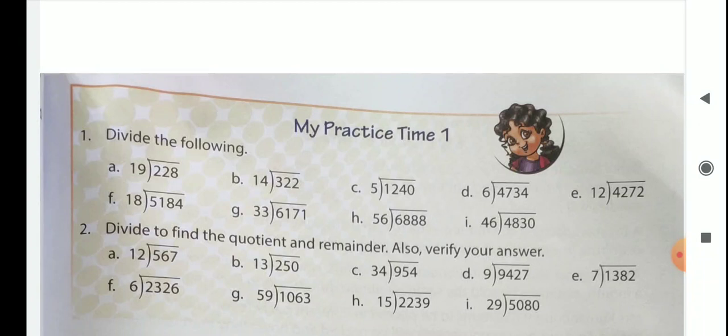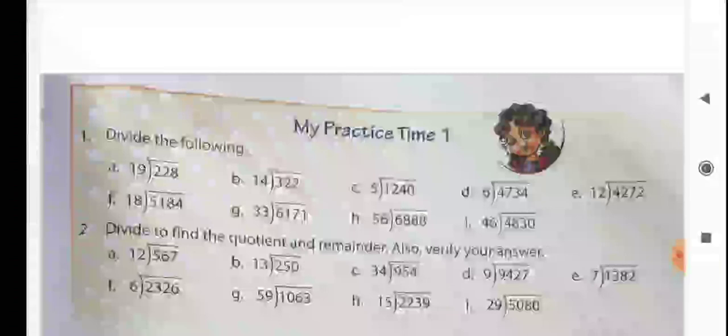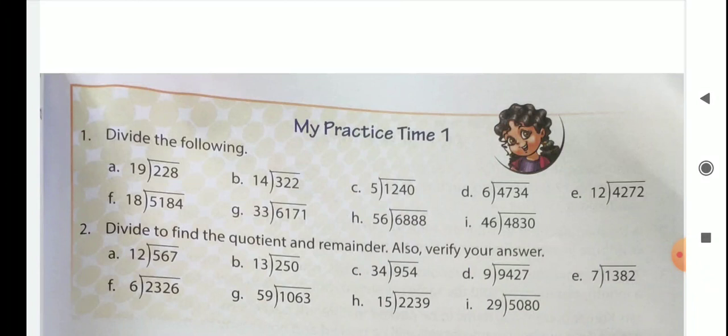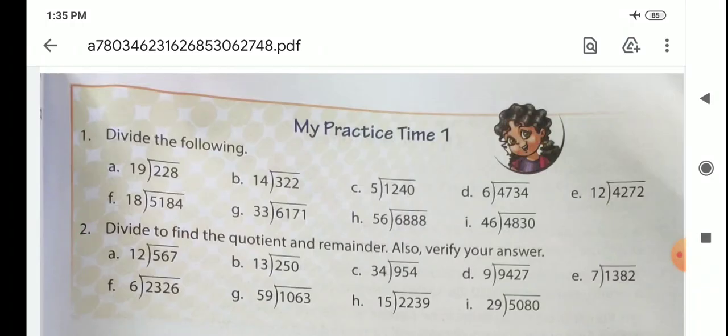Then number 2 you see. Divide to find the quotient and remainder, also verify your answer. So children, first you divide the given division, then find out their quotient and remainder, then also verify LHS and RHS side.